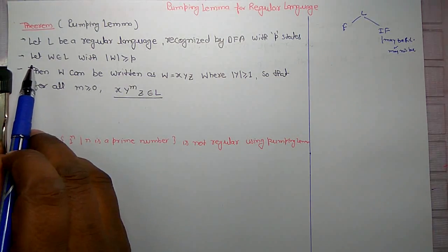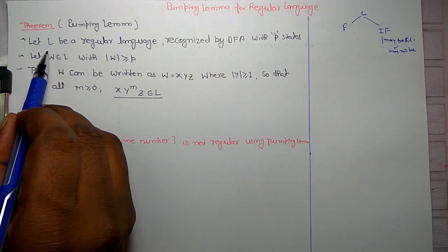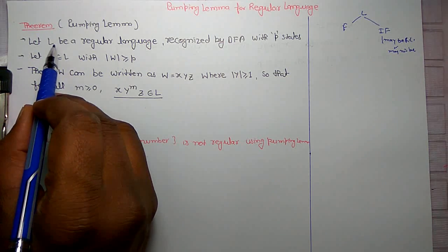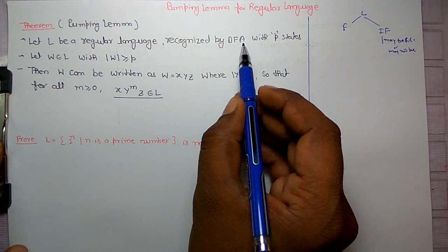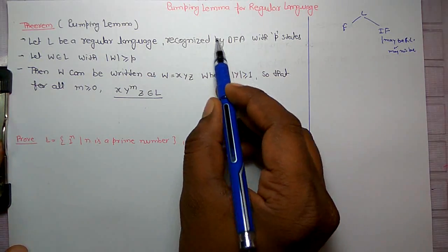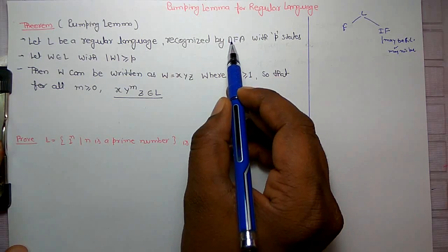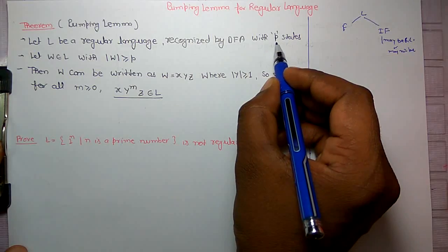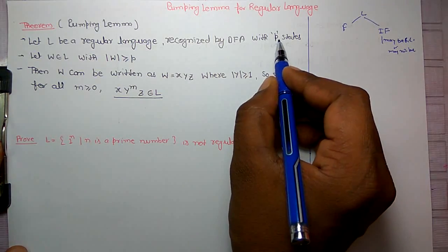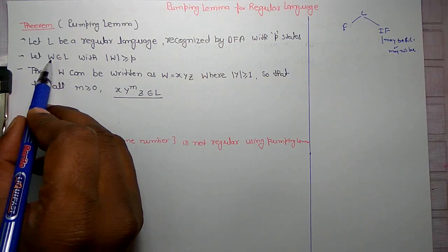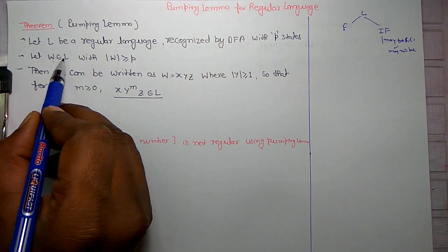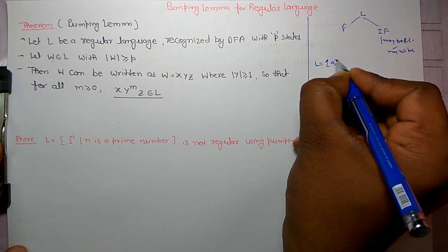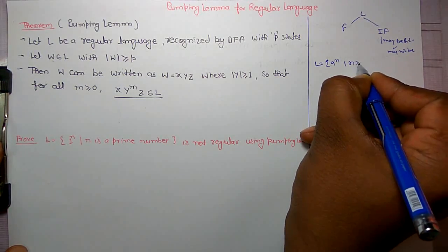Pumping lemma says: if there is a language L and it is regular, then it must be recognized by some finite machine — a deterministic finite automaton — and there would be some number of states P. If we assume a string W which is part of L, for example L = {a^n | n ≥ 1}.